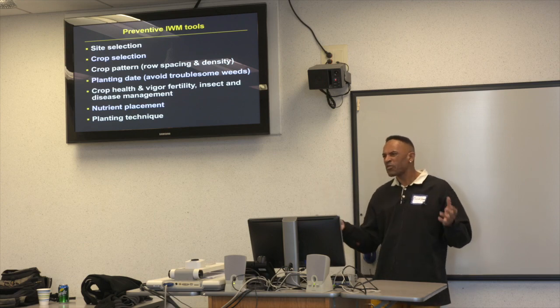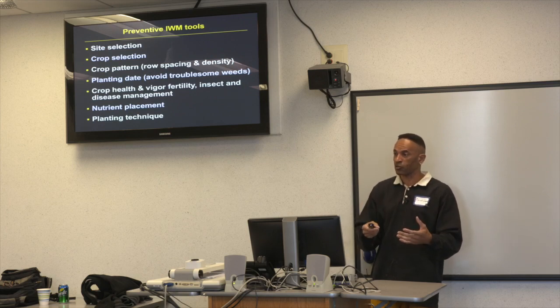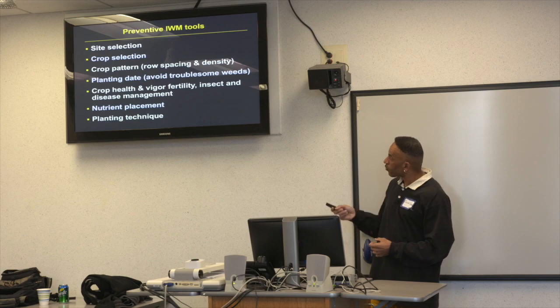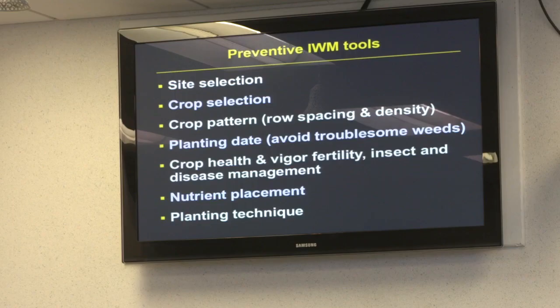Crop planting pattern matters. In soybeans, for example, narrow row spacing causes the canopy to close sooner, suppressing weed populations. In some vegetable situations you can plant rows a bit tighter or add more seeds per row. A denser canopy closes sooner and more seeds on the ground means fewer niche spaces for weeds to germinate — though you have to balance this against yield.